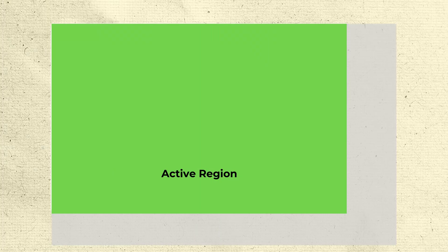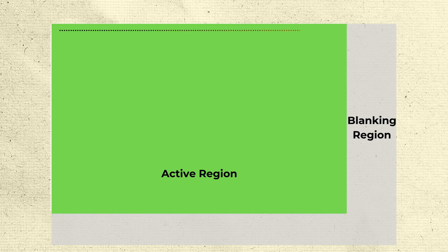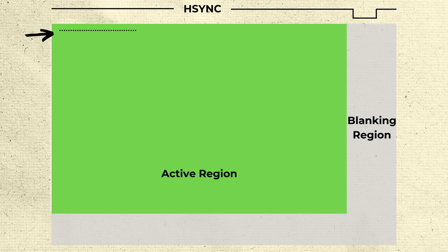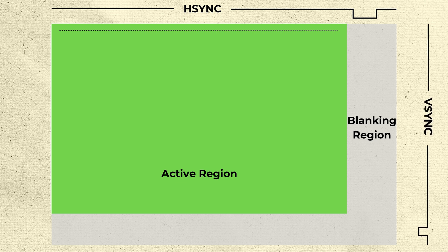Let me briefly explain how it works. Firstly, we need to know how the VGA signal is defined. VGA uses two signals for frame synchronization. The horizontal synchronization signal basically says 'Next line! Next line!' — it tells the screen to move to the next row of pixels. The vertical synchronization says 'Next line!' — it tells the screen to move back to the first row. There are also defined timings for the blanking region and synchronization pulses, but let's skip them for now. This will be needed when I implement a VGA signal generator.